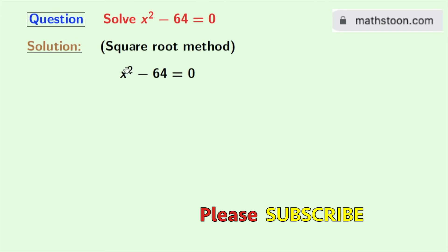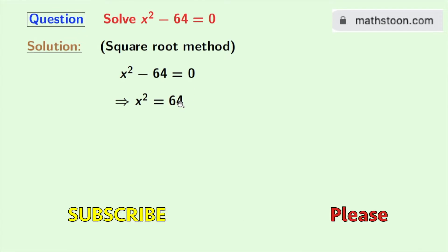Our given equation is x² minus 64 is equal to 0. We can rewrite this expression as x² is equal to 64. We all know that 64 is 8 squared, so we will take it.